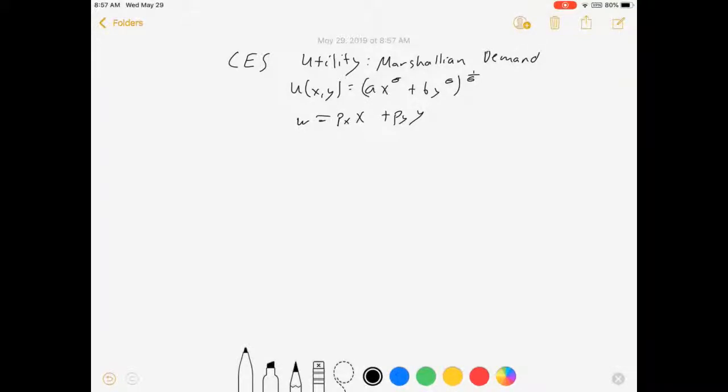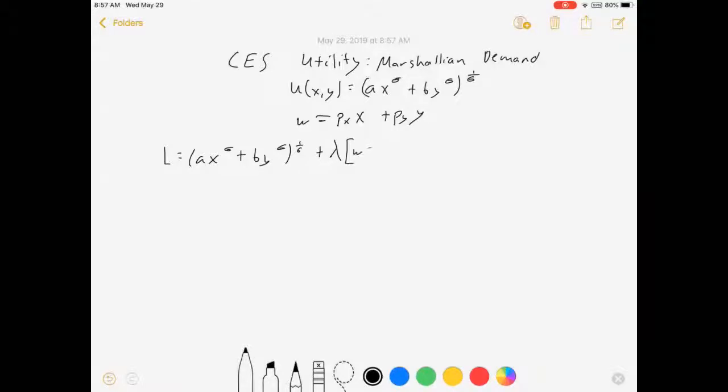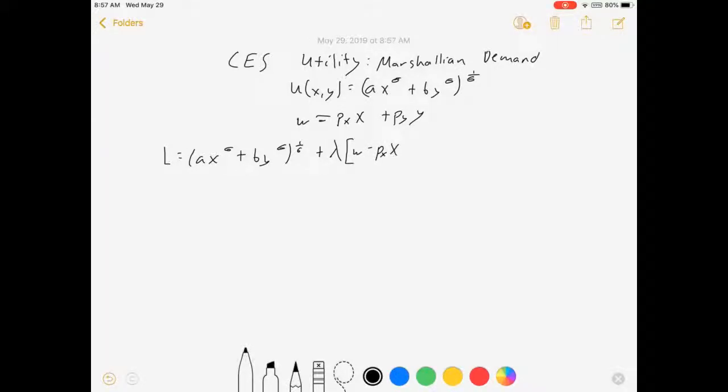We also have a linear budget constraint. So our Lagrangian, our objective function goes first. That's the thing we're maximizing, in this case utility. Lambda times w minus px times x minus py times y.